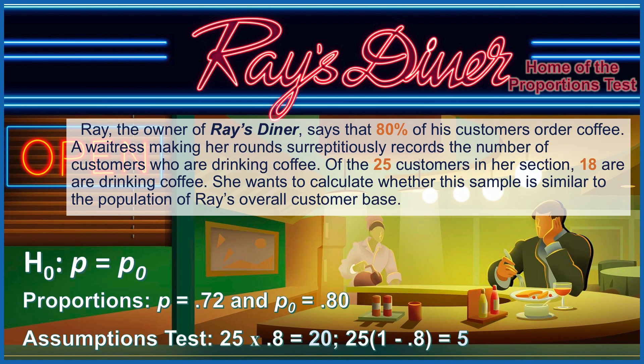Let's see what type of problem we have to solve. Ray, the owner of Ray's diner, says that 80% of his customers order coffee. The waitress making her rounds surreptitiously records the number of customers who are drinking coffee. Of the 25 customers in her section, 18 are drinking coffee. She wants to calculate whether this sample is similar to the population for Ray's overall customer base.